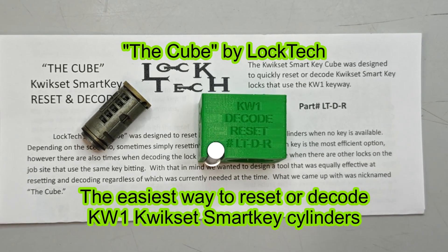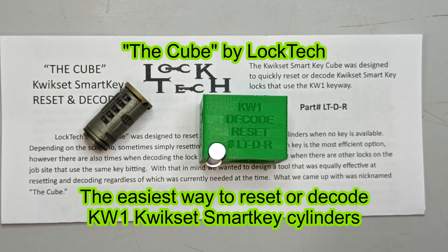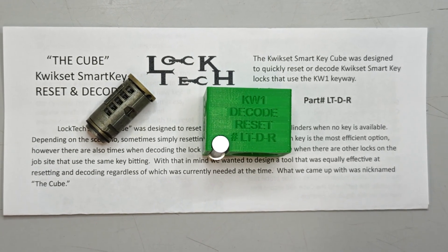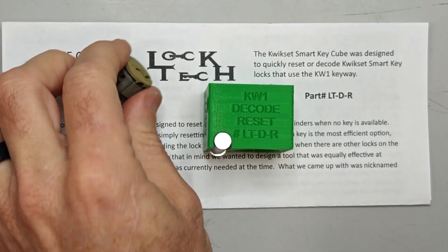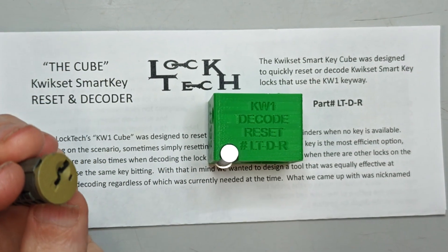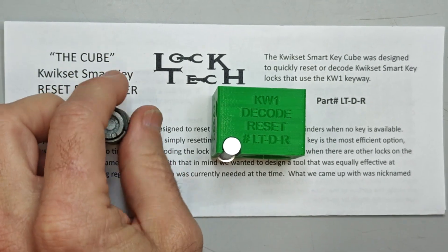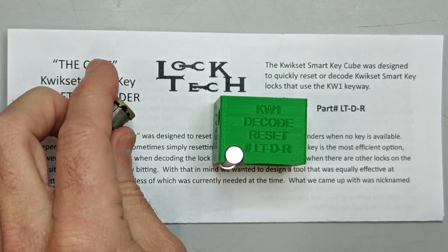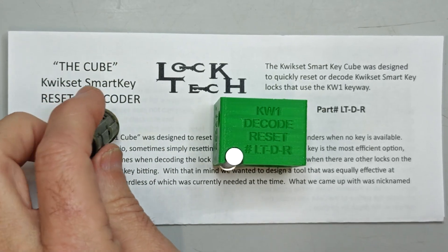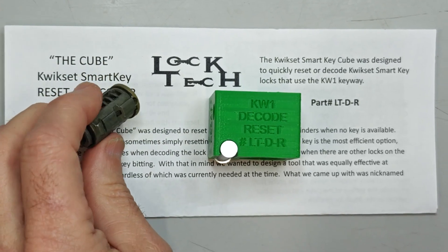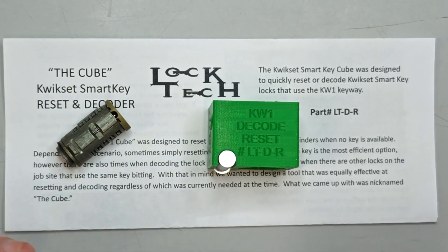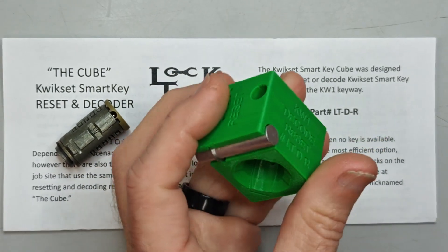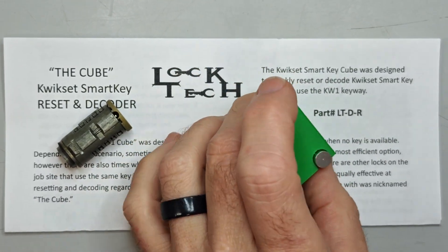It is designed to reset or decode a Kwikset SmartKey cylinder quickly and easily when you have the cylinder in your hand. There's numerous reasons why sometimes you'd want to decode it, if you have multiple locks at the same location that are on the same keyway or on the same key, or if you've just got one you might want to just reset it and move on. But if you do have multiples, it's much easier to decode it and then you have a working key for all the rest of the locks.